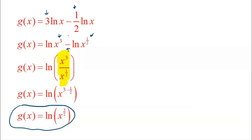So the final answer is the natural log of X to the five halves — one natural log with a simple expression inside. Some students might ask if they can write that as the square root of X to the fifth, but you don't have to; you can just leave it as X to the five halves. There's also a second way to do this problem: three natural logs minus a half natural log is like three apples minus half an apple — you get five halves natural logs. Then using the power rule, the five halves comes up as the power, giving the same final answer.